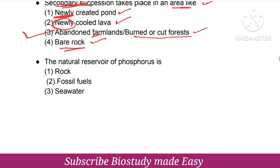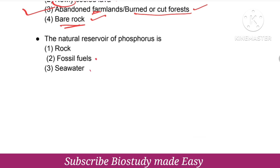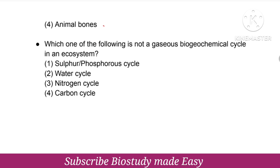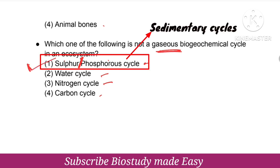Natural reservoir of phosphorus is rock. Which of the following is not a gaseous biogeochemical cycle? Options are sulphur or phosphorus cycle, water cycle, nitrogen, and carbon cycle. The answer is the first option — phosphorus cycle and sulfur cycle are not gaseous cycles; they are examples of sedimentary cycles.